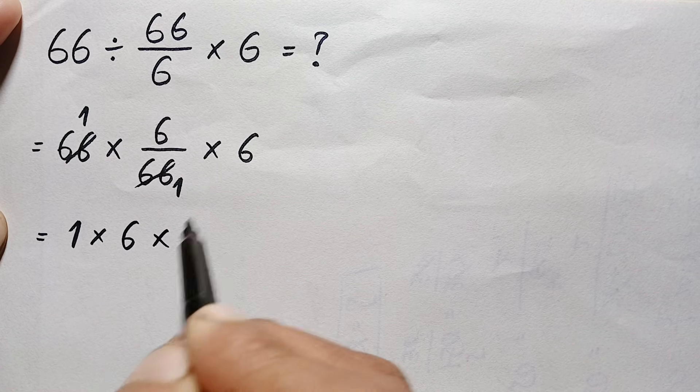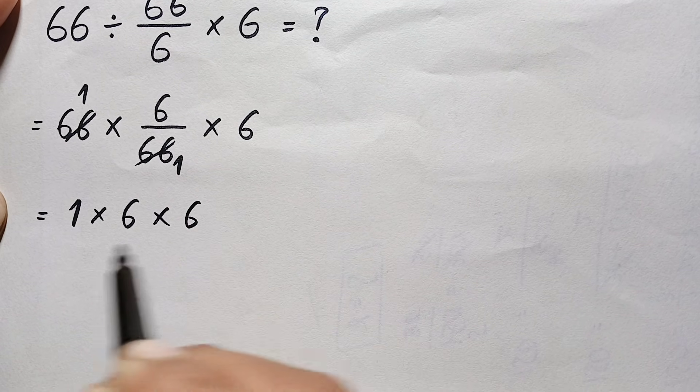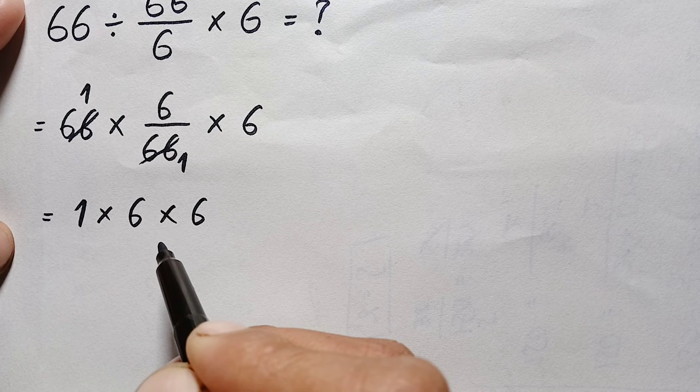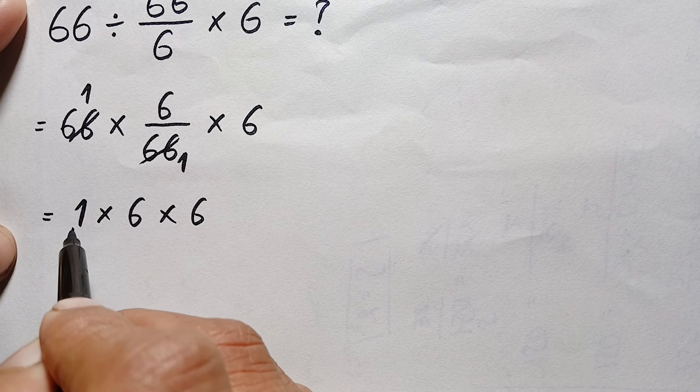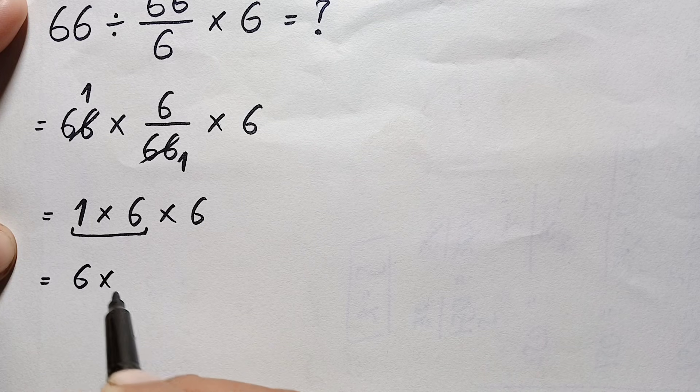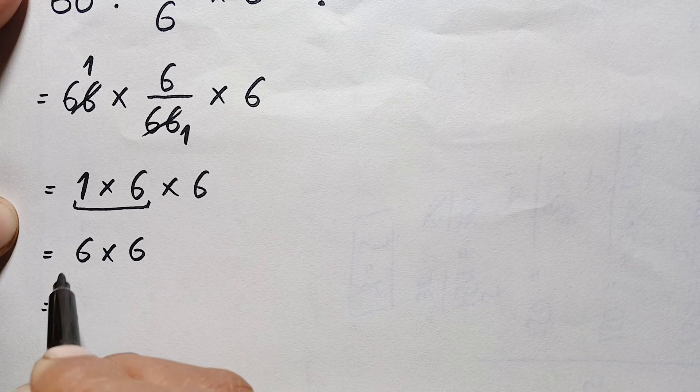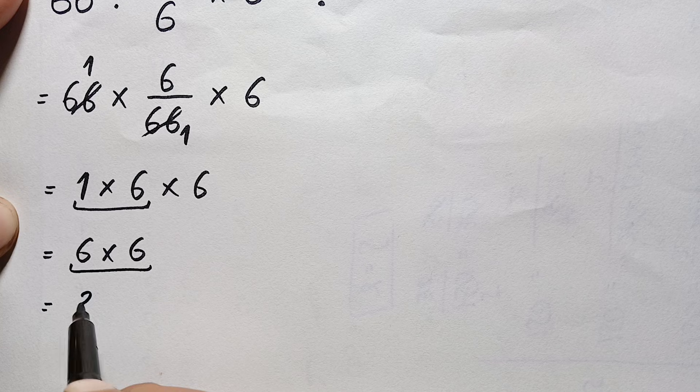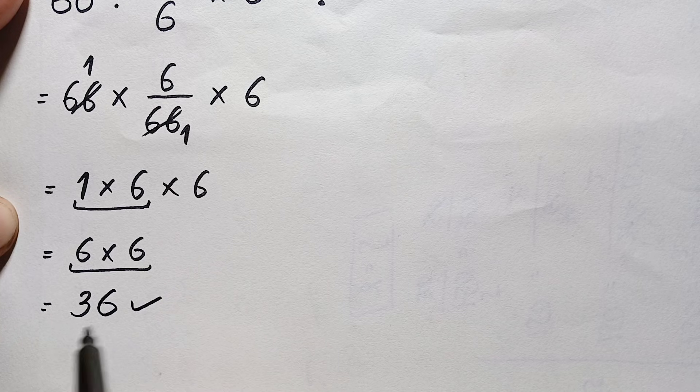Here we have two operations of multiplication, so here we will do this multiplication first. 1 times 6 is just 6 times 6, and finally 6 times 6 is 36. And that is our final correct answer.